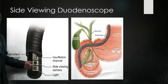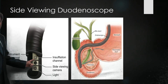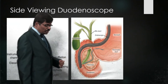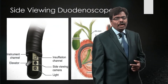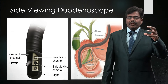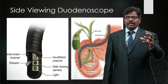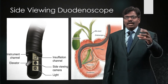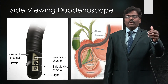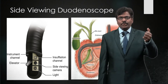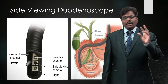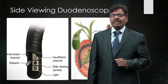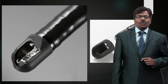You can see the side-viewing camera along with the light and insufflator. Most important is the elevator — the control of which is just next to the big wheel. You hold the duodenoscope in your left, non-dominant hand. Next to the big wheel you have the up-and-down elevator control. This lets you see what we call the medial wall of the second part of the duodenum, which is nicely seen thanks to the side-viewing scope.